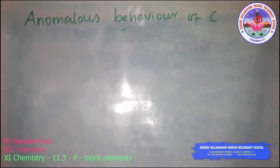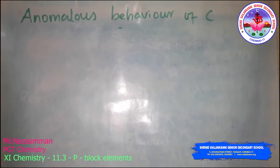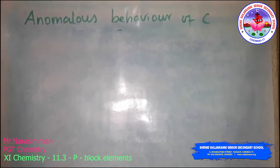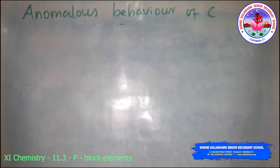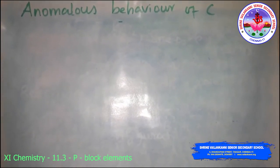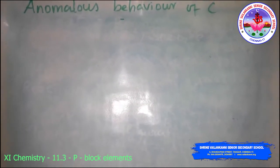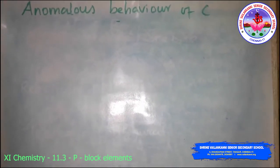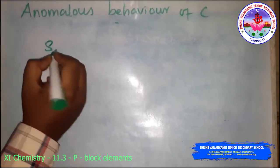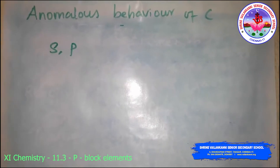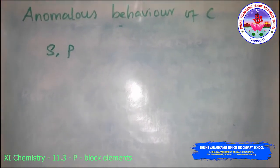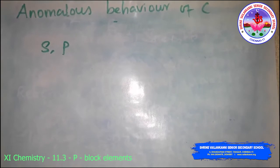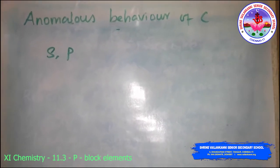Carbon is the first member of Group 14 and differs from the rest of the members because it has smaller size, high electronegativity, high ionization enthalpy, and unavailability of the d orbital. Only s and p orbitals are available for bonding. Carbon's atomic number is six, so it can accommodate only four pairs of electrons around it, limiting its maximum covalence to four, whereas other members can expand their covalence due to the presence of d orbitals.